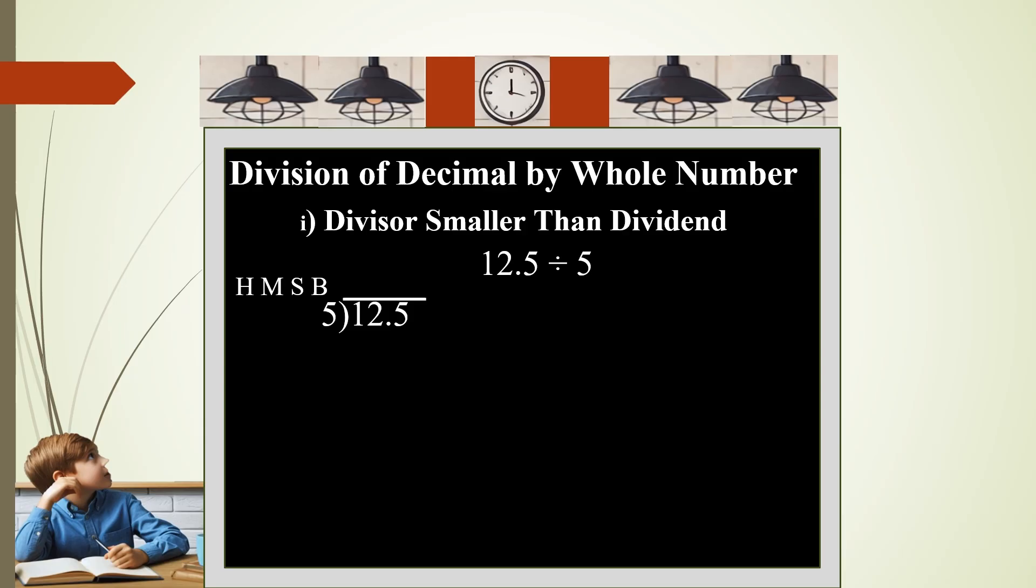Here, 5 will go in 12 how many times? 2 times. Then multiply: 5 times 2 equals 10. Subtract: 12 minus 10 is 2. Before you bring down, because it is decimal, you have to place the decimal point above the decimal point in the dividend. The place value is maintained throughout the division. Bring down 5, so we get 25. 5 will go in 25 five times. 5 times 5 is 25. Subtract, you get 0. Remember, decimal needs to appear only in the dividend and the quotient. 12.5 divided by 5 is 2.5.